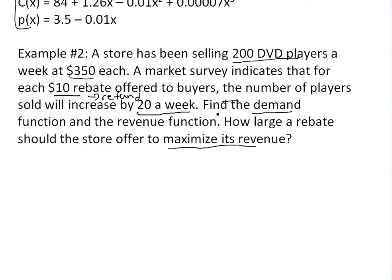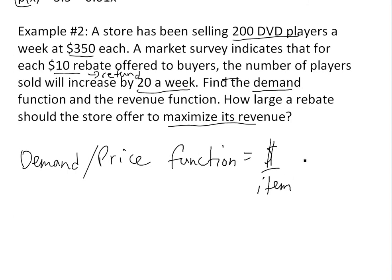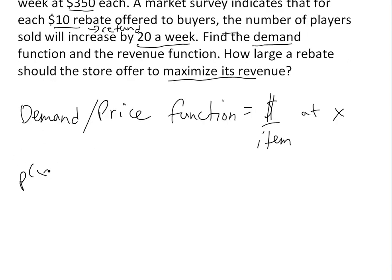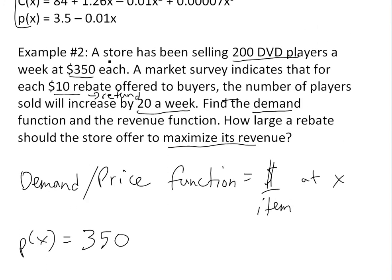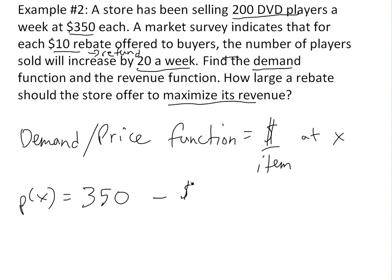Now let's find the demand and revenue functions. The demand function, as you recall from my earlier video (see the video link below), is also called the price function. It's basically the cost per item that you're selling at X amount of items. Initially, P(x) is just 350 when selling 200 items at $350 each. But if we give buyers a $10 rebate, sales increase by 20. So we have a ratio of $10 rebate per 20 change in DVD players sold, times the change X minus 200.